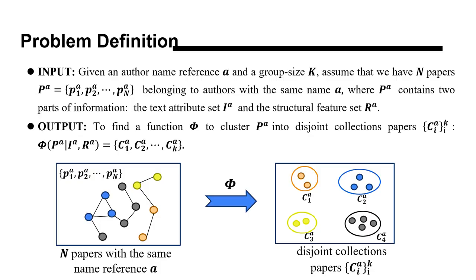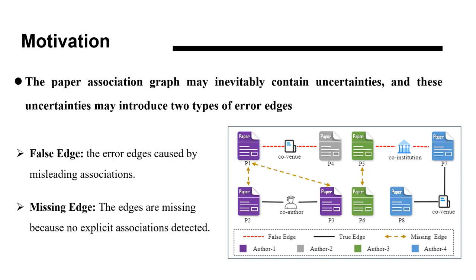First, I introduce the problem definition. Given an ambiguous name reference A and a cluster size K, we assume that we have N people with the same name reference A, and the model tries to find a function phi to cluster them into disjoint groups of papers. The paper association means co-authorship and citation, and there are two types of error edges introduced: false edges caused by misleading associations, and missing edges where no explicit associations are detected.